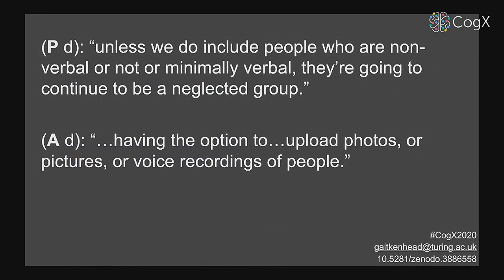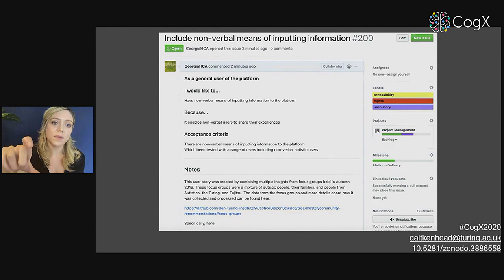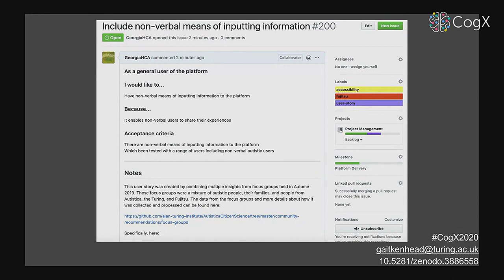When we gather information, ideas, and concerns from autistic people during this project, they get translated directly into actions for the development of the platform. Here is a parent of an autistic person and an autistic person talking about things they value and would like as features of the platform — and here you can see that becomes an issue on GitHub. This issue takes the form of a user story: 'I would like to have non-verbal means of inputting information because it enables non-verbal users to share their experience.' The acceptance criteria are then added by the development team, but all of this is visible to anyone who wants to look.